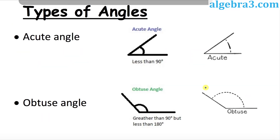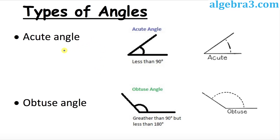Here we're going to be talking about the types of angles. The first type is the acute angle. An acute angle is always less than 90 degrees. For example, 45 degrees is an acute angle, 30 degrees is another acute angle, and even 89 degrees is an acute angle, because all these angles are less than 90 degrees.